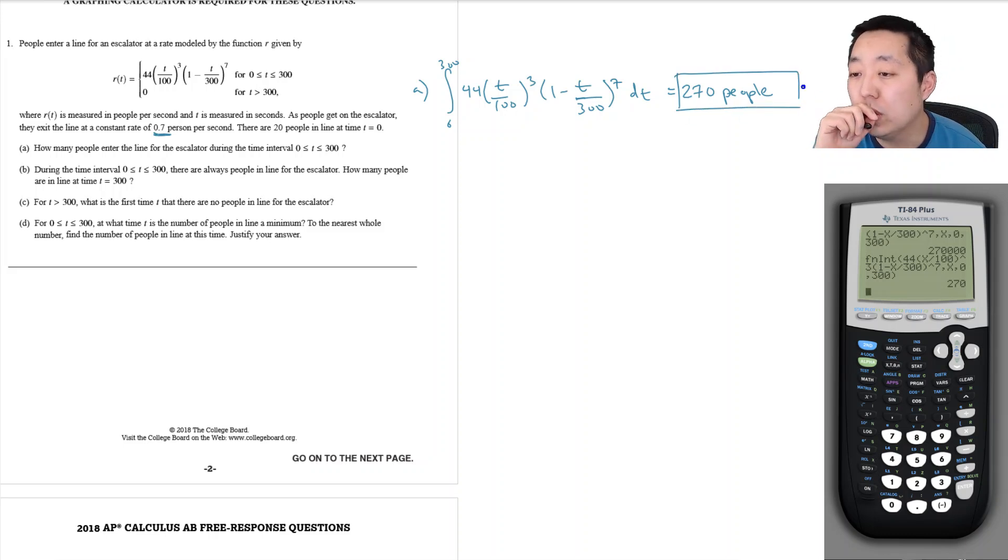During the time 0 to 300 there are always people in line for the escalator. Part B: How many people are in line at time t equals 300?